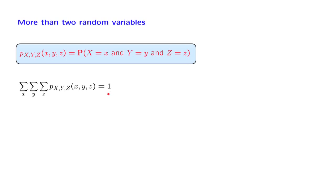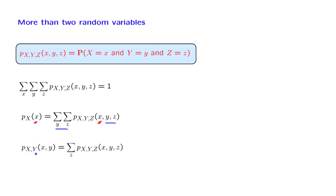Once we have the joint PMF of three variables, we can again recover marginal PMFs. To find the probability that X takes on a specific value little x, we consider all possible triples in which X takes that value and sum over all possible Y's and Z's that could go together with that X. Similarly, to find the joint PMF of X and Y, we consider all possible Z's that could go with that (x, y) pair — ranging over all outcomes where X and Y take specific values but Z is free — and sum those corresponding probabilities.